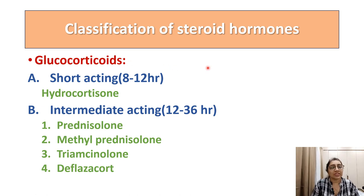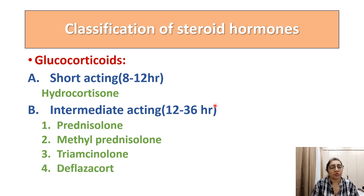Classification of corticosteroids by duration of action: short-acting glucocorticoids act for 8 to 12 hours — hydrocortisone. Intermediately acting corticosteroids act for 12 to 36 hours — prednisolone, methylprednisolone, triamcinolone, and deflazacort. These four are intermediately acting corticosteroids.